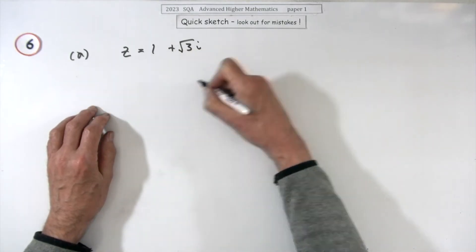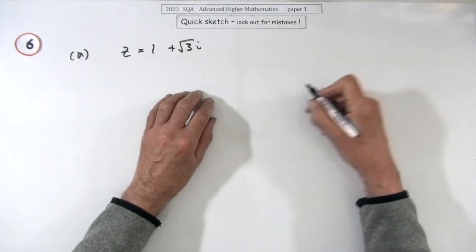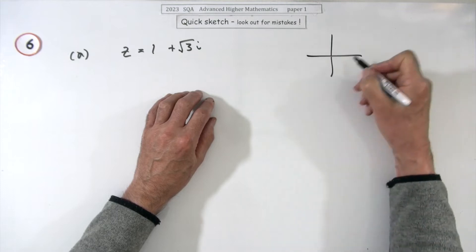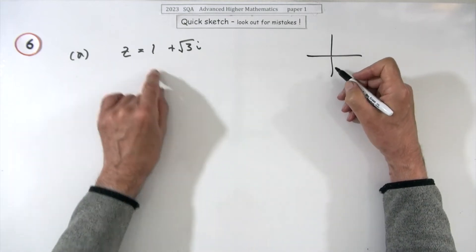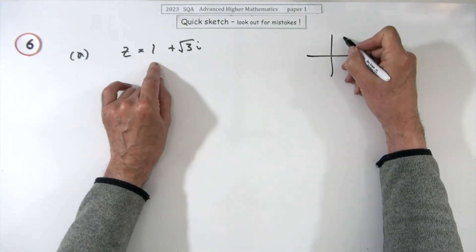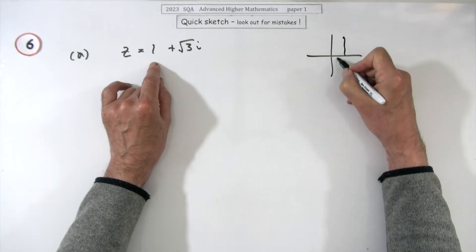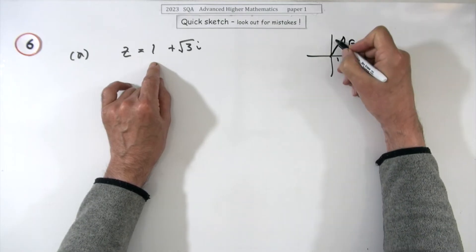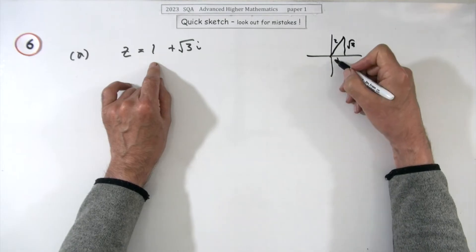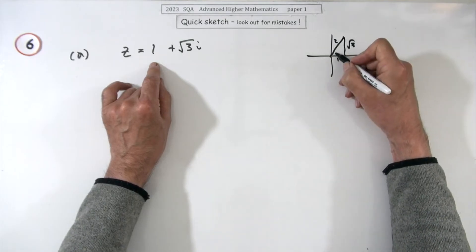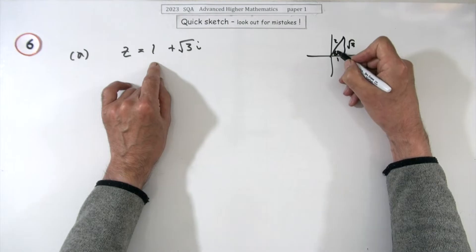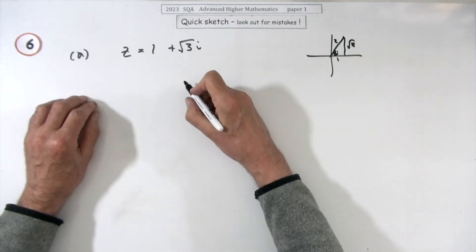Well you could do the Pythagoras and the inverse tan, but when you recognize the numbers the quickest way would just be to plot that in the Argand diagram. One along, root three up, because you recognize that one, root three, that's a one, two, root three, that's a 60-30 triangle, that's 60 degrees, but put it into radians though.